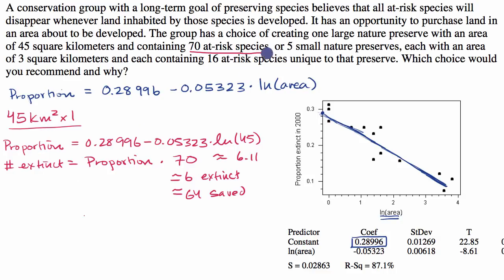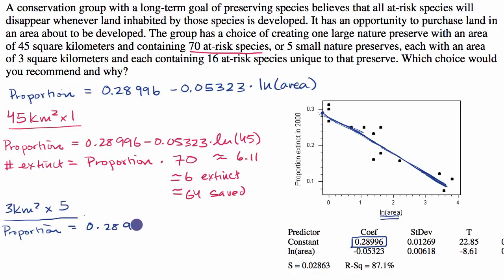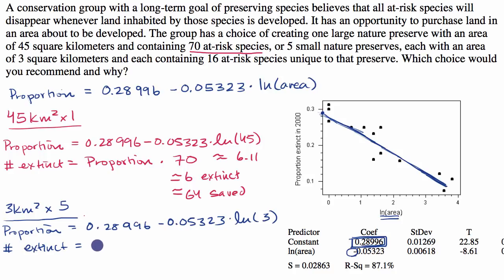Now let's think about the scenario with five small nature preserves — three square kilometers times five islands. The proportion that goes extinct is 0.28996, minus 0.05323 — that's the negative slope — times the natural log of three square kilometers. The number extinct equals that proportion times the total species: five islands each containing 16 at-risk species, so five times 16 equals 80 total species. So it's that proportion times 80.